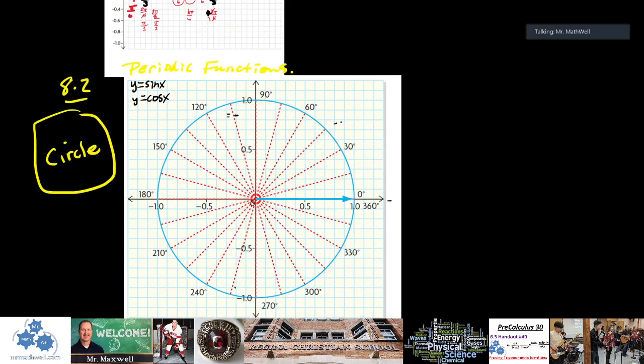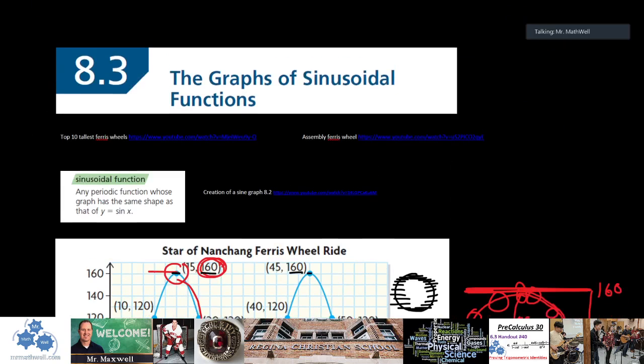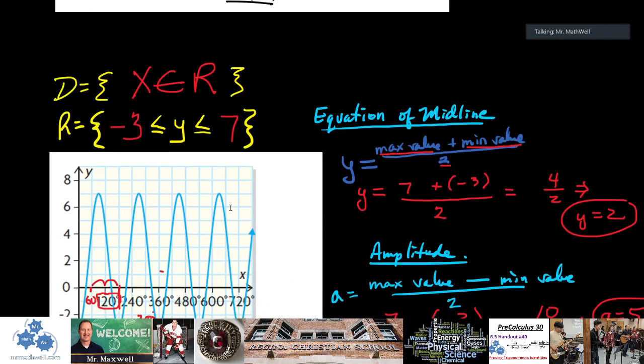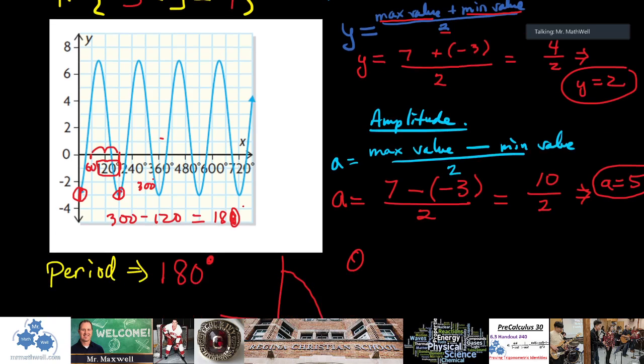That's 8.2, sine and cos. 8.3 - graphs. Here's where we started to play around a little bit with the different parameters of the graphs. We did some calculations of graphs that weren't just y equals sine x or y equals cos x. Like this graph here is obviously not just y equals sine x because the period's all off, the amplitude's all off, and it's been shifted up a little bit. So we can find the different things like the equation of the midline, the period and the amplitude.